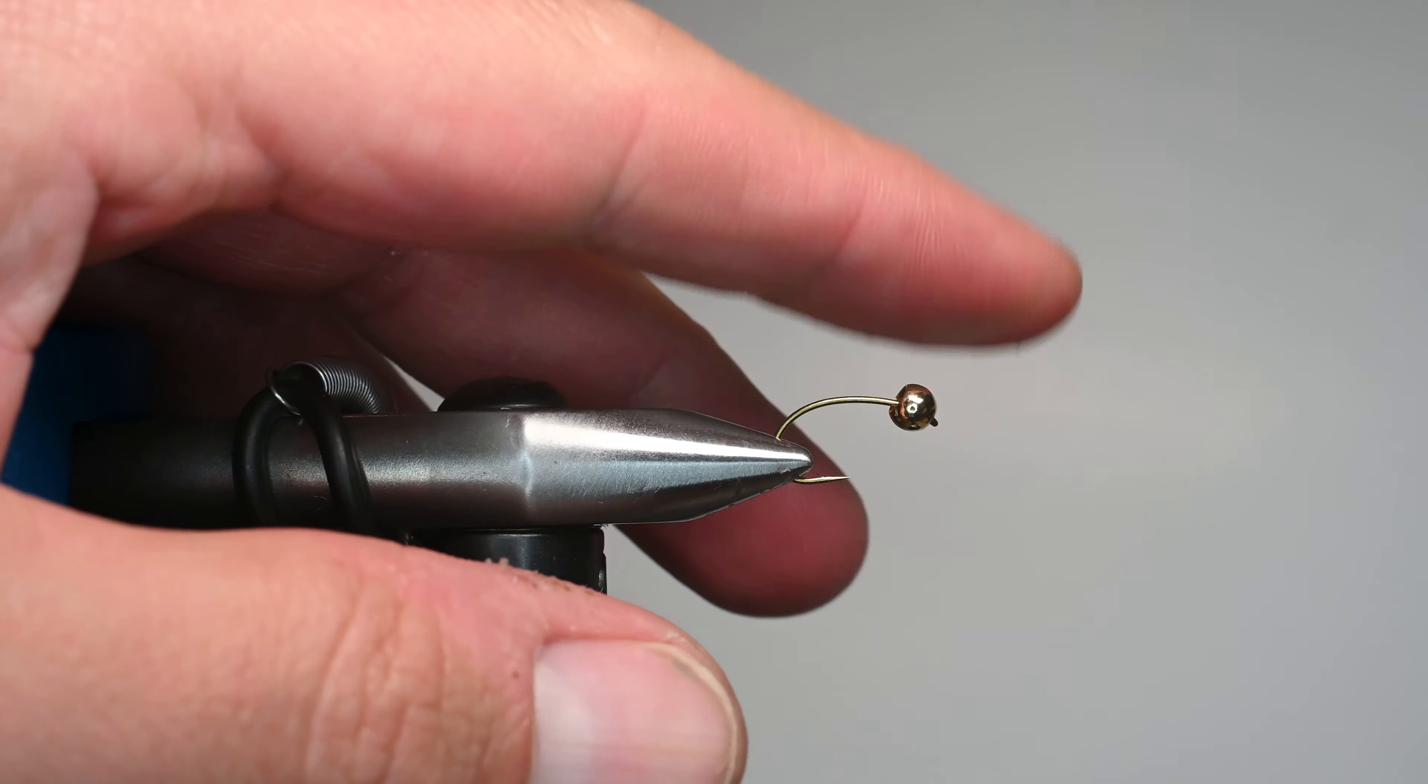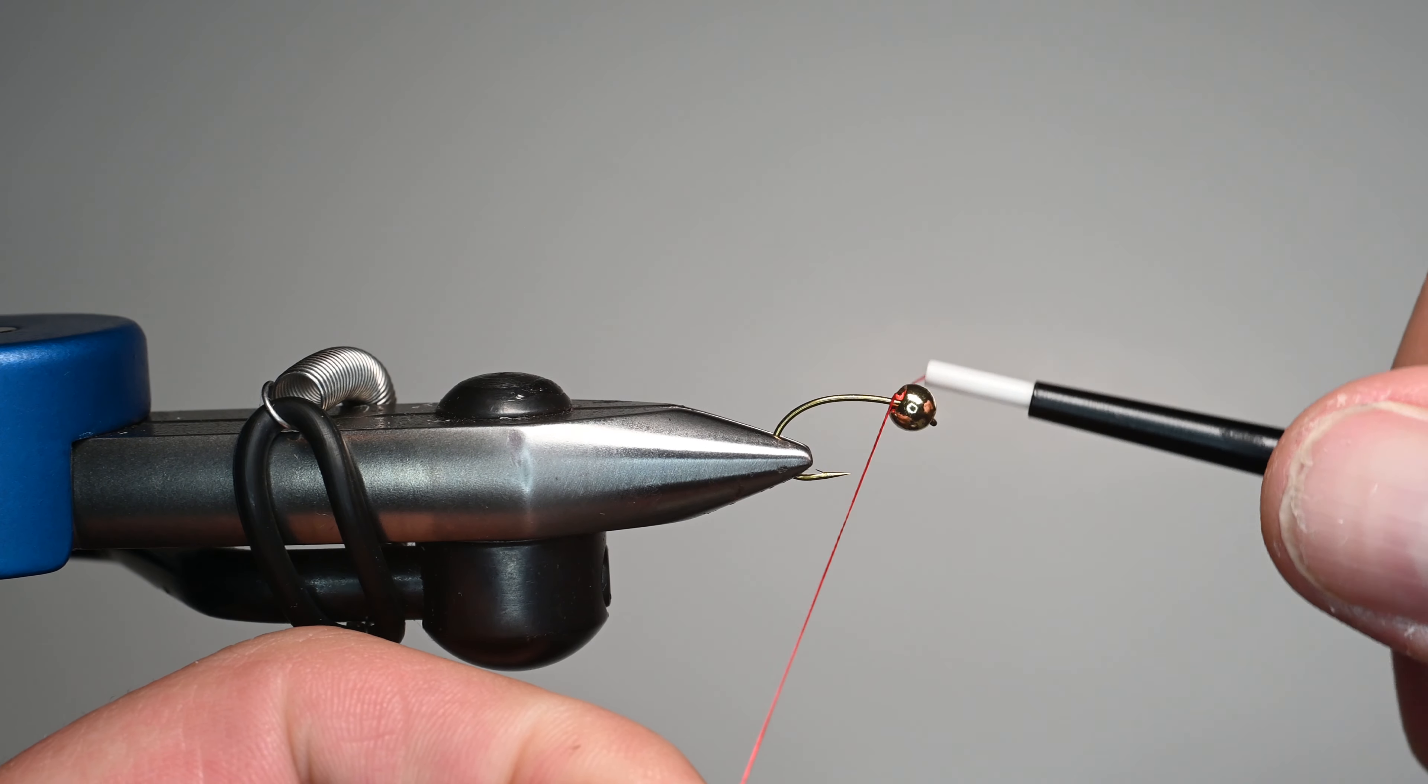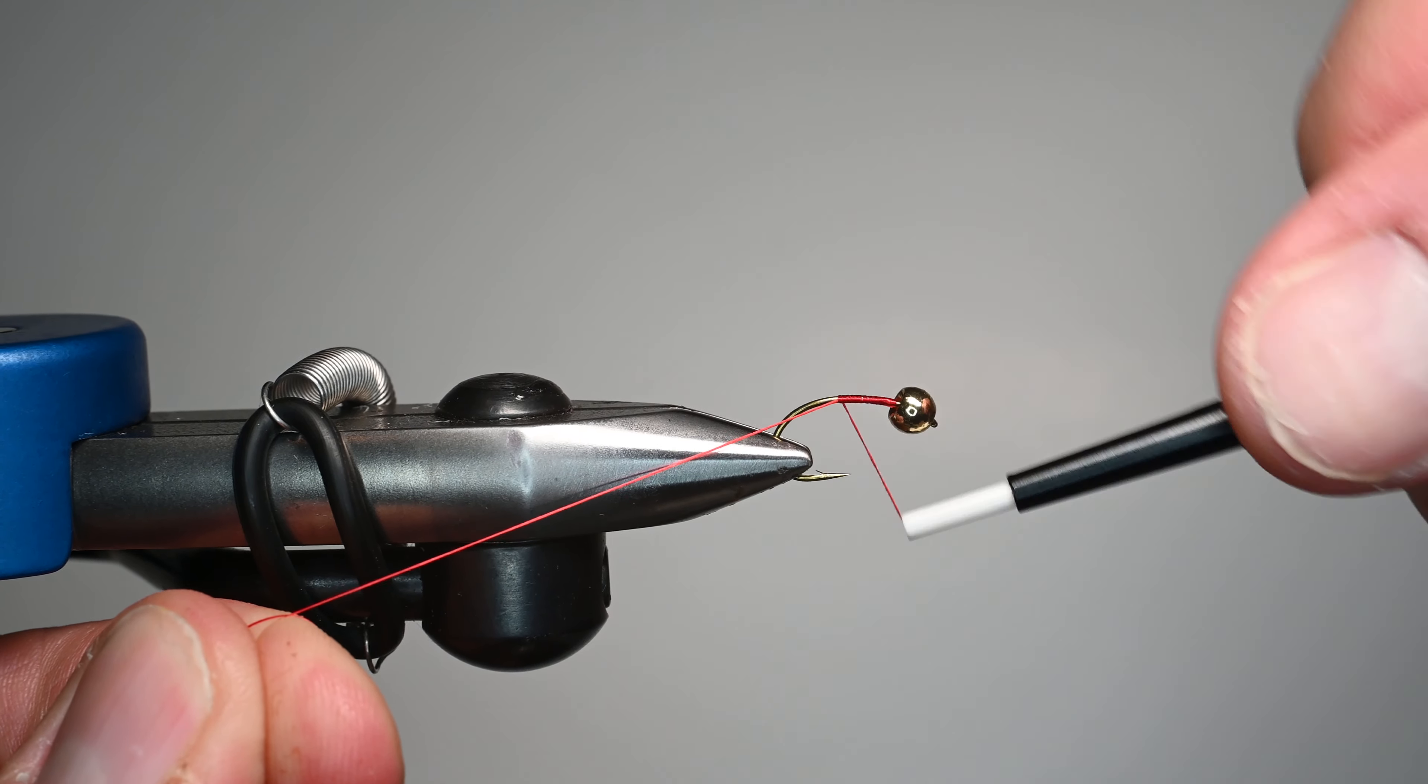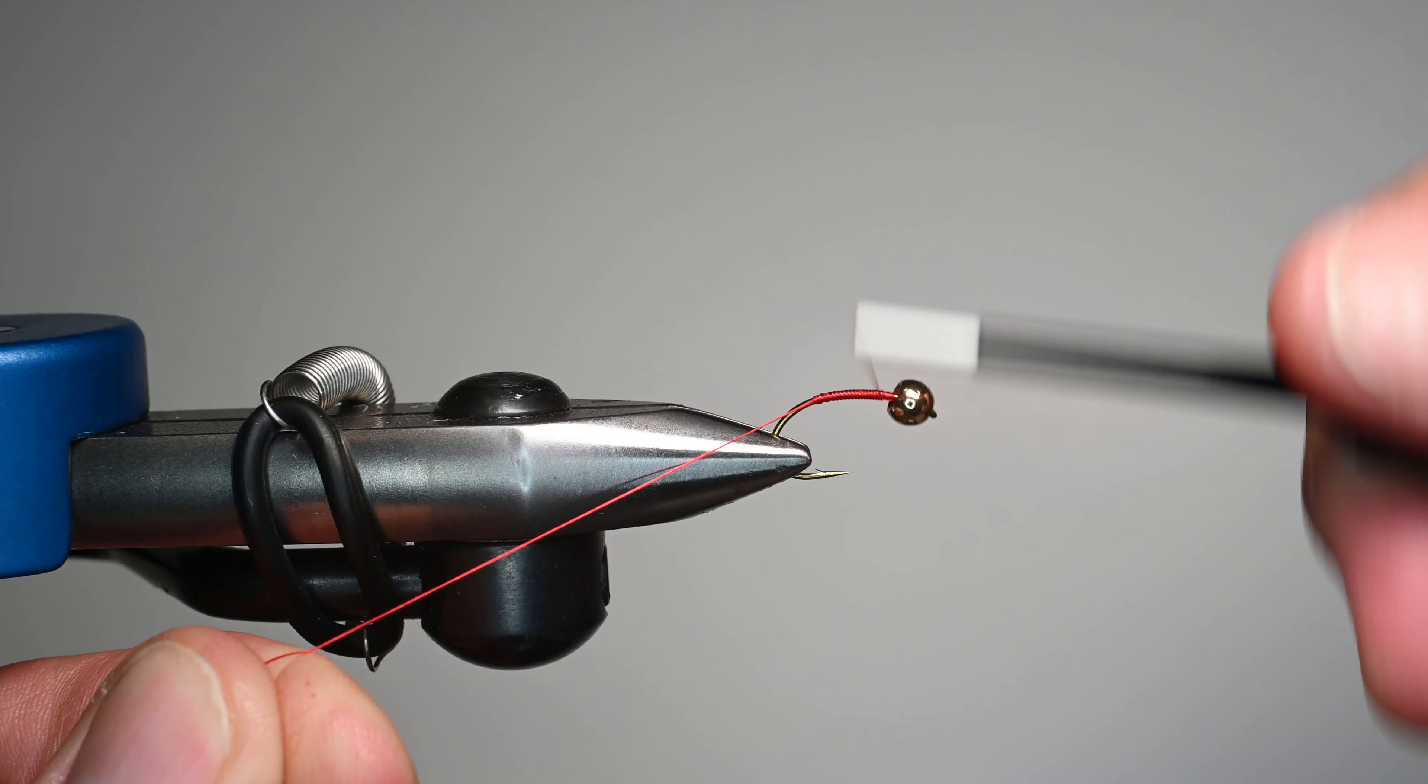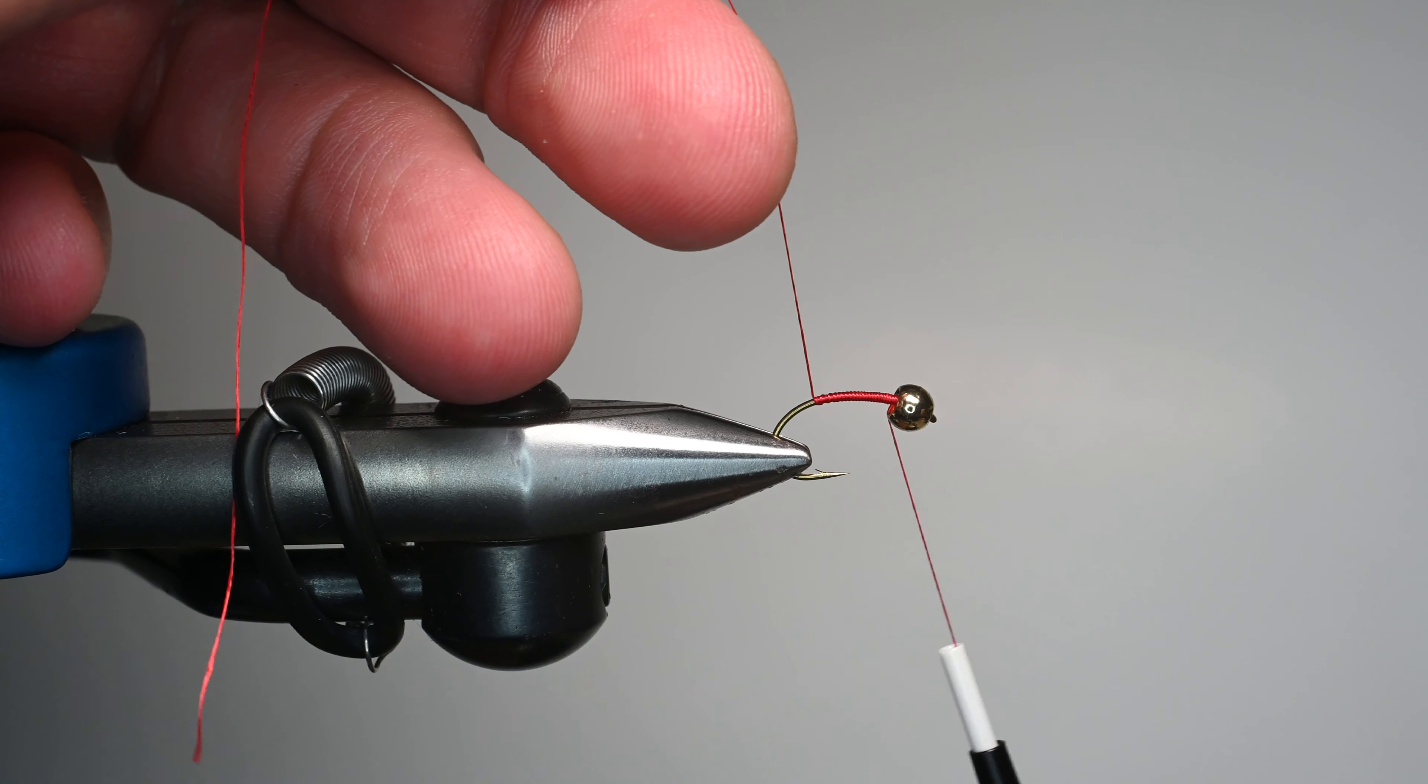We've got the bead on there. It's already in the vise. We've got our hook in the vise. It's secure. We're going to go ahead and start our thread right here behind the bead. Work our way down the shank. This is simply to give something for this mop to grip to. We're going to be applying a little bit of glue. We're going to be applying a little bit of wraps to the core of it.